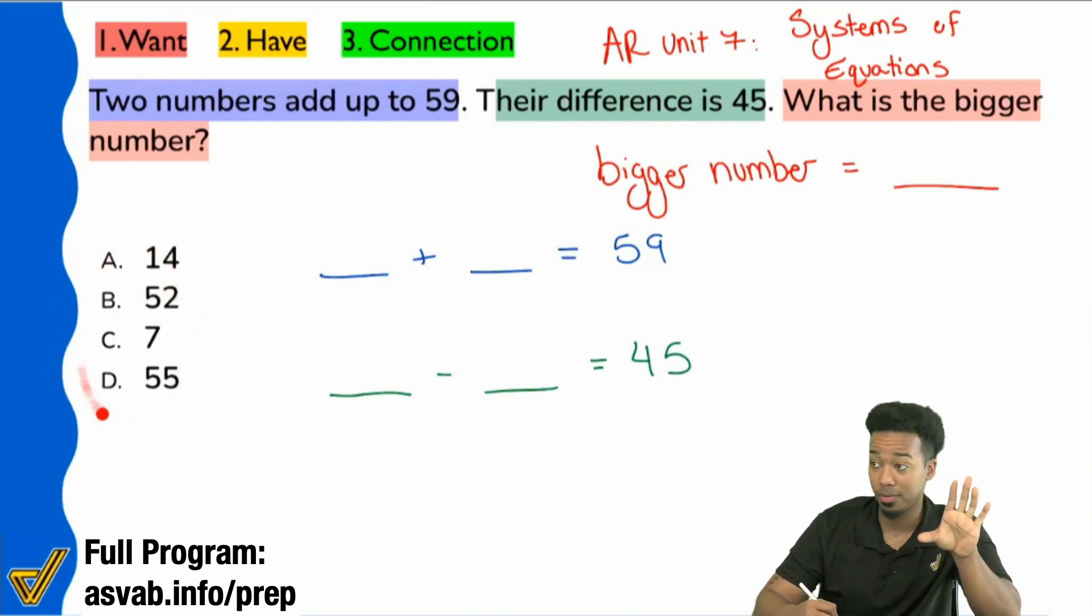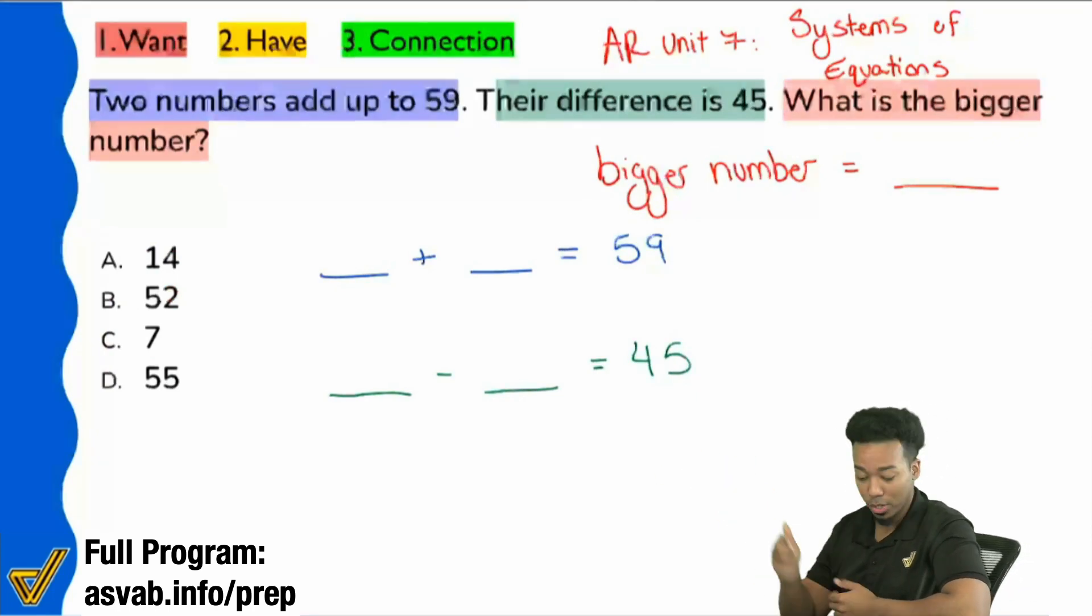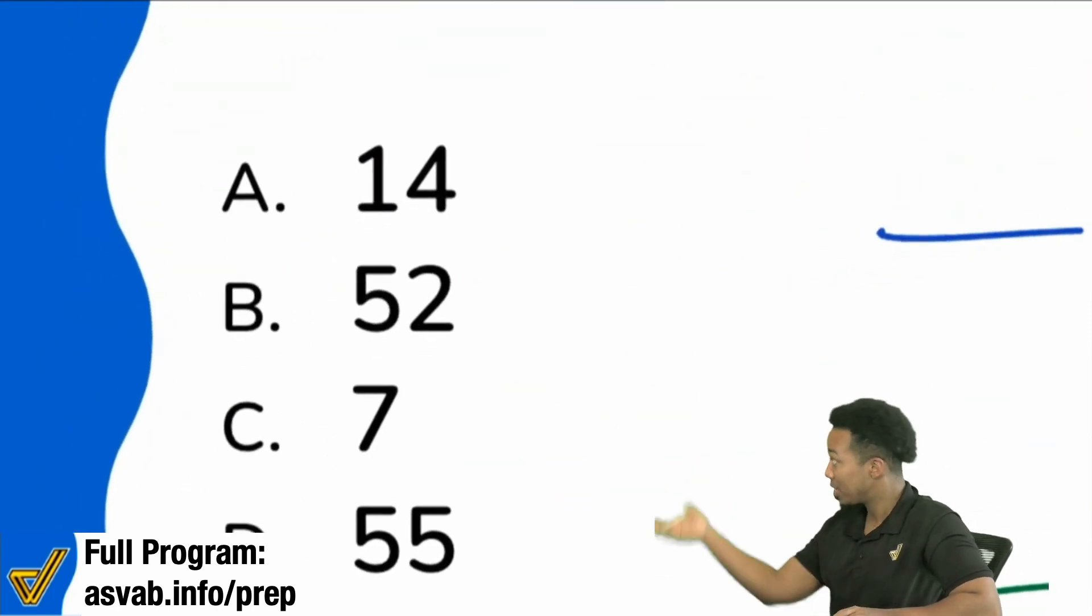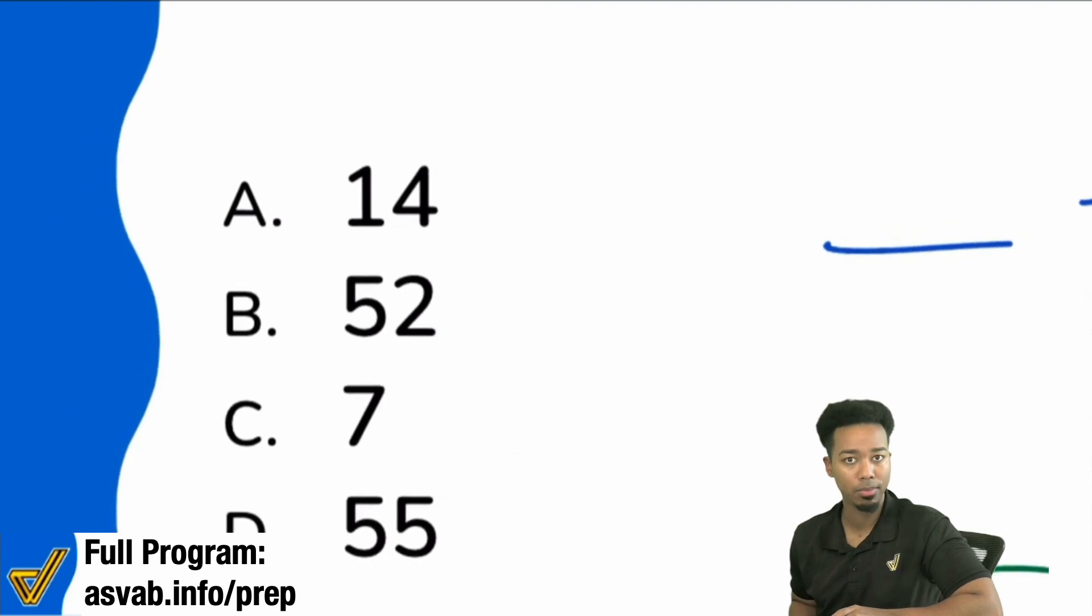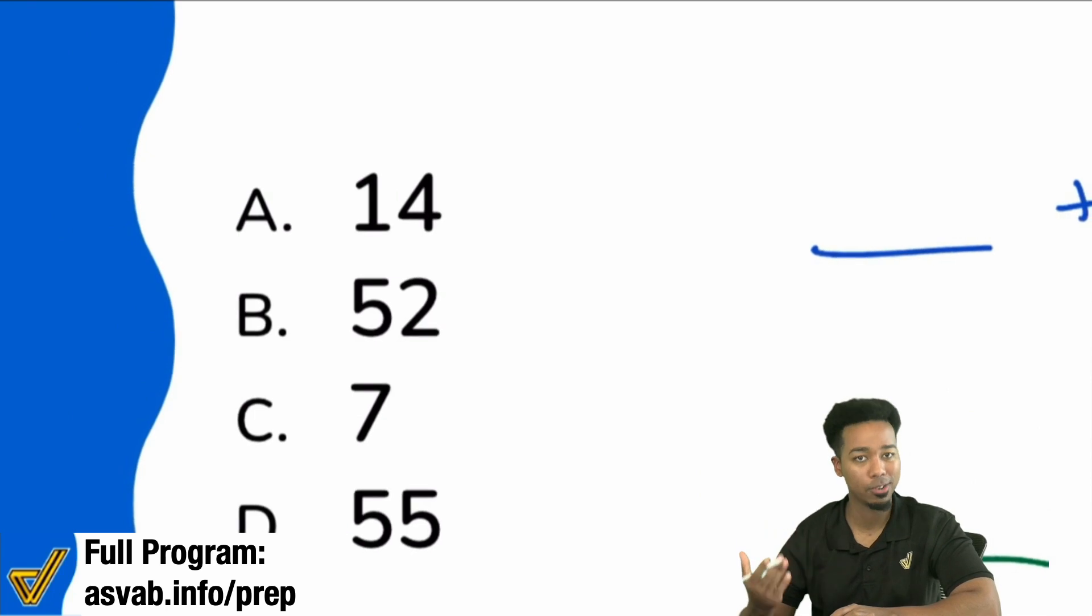So what does that mean then? What do these answer choices represent then? Again, this is a very straightforward question, but I want you to answer it just to make sure we're on the same page. Everybody, these answer choices represent what? Yeah, the possible bigger number. We're looking for the bigger number. These represent the bigger number. We just have to figure out which one of these is the right one.